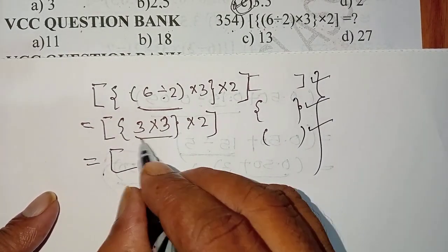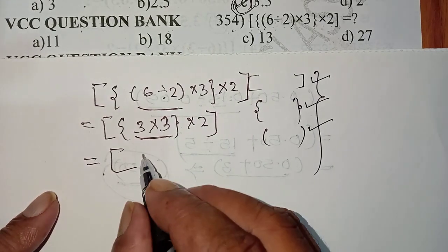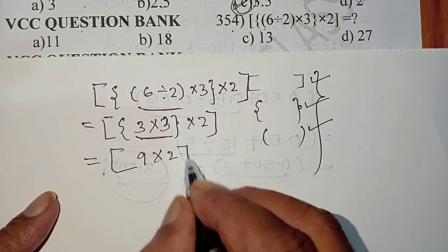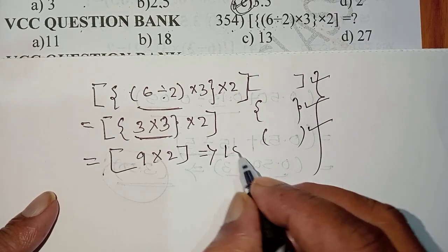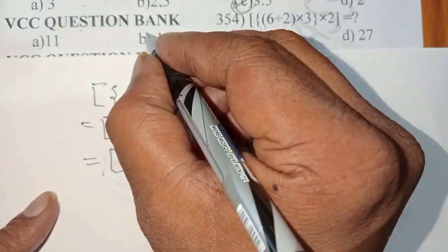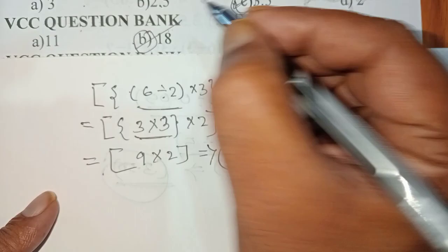Next one, we should open flower bracket. 3 times 3 is 9. Next answer is 18. 18 means option B is the correct answer.